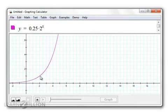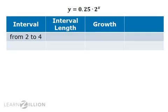When x equals 2, y equals 1, and when x equals 4, y equals 4. So on the x interval from 2 to 4, which is an interval of length 2, the graph grows from 1 to 4.